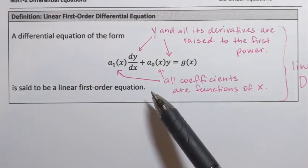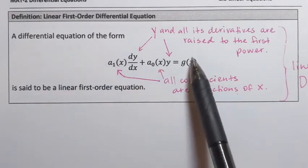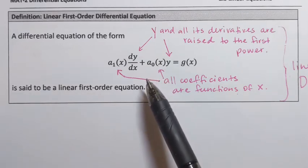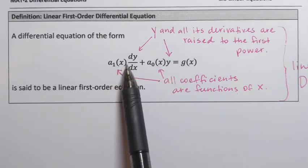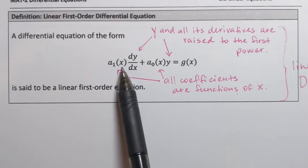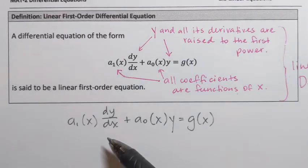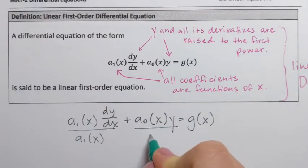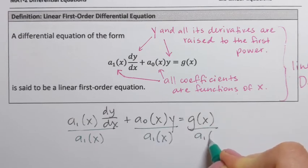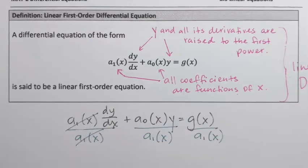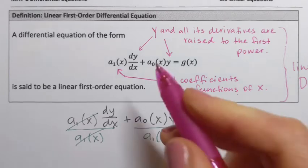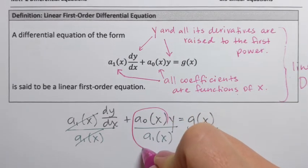When we try to solve a linear first-order differential equation, we want to put it in a different form. We're going to modify this general form by dividing every term by the leading coefficient a₁ of x. After dividing, the leading coefficient cancels, so there's nothing in front of dy/dx. Next, we're going to rename what we have in front of y and on the right-hand side.